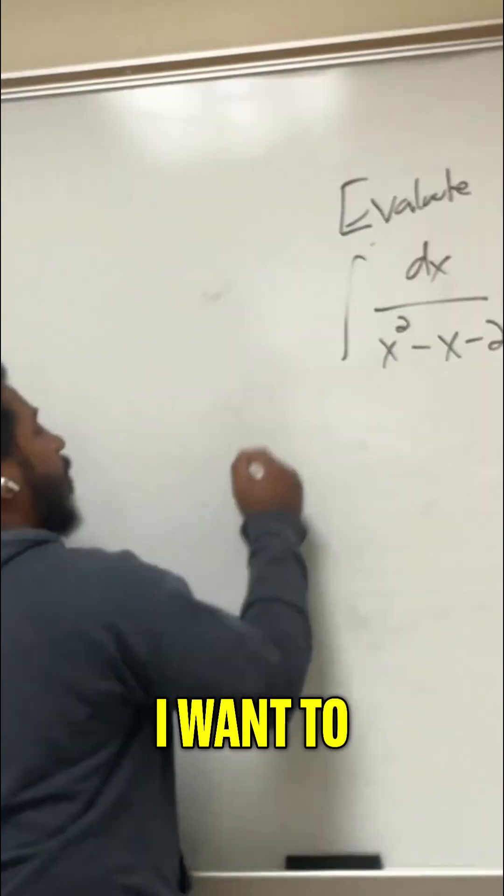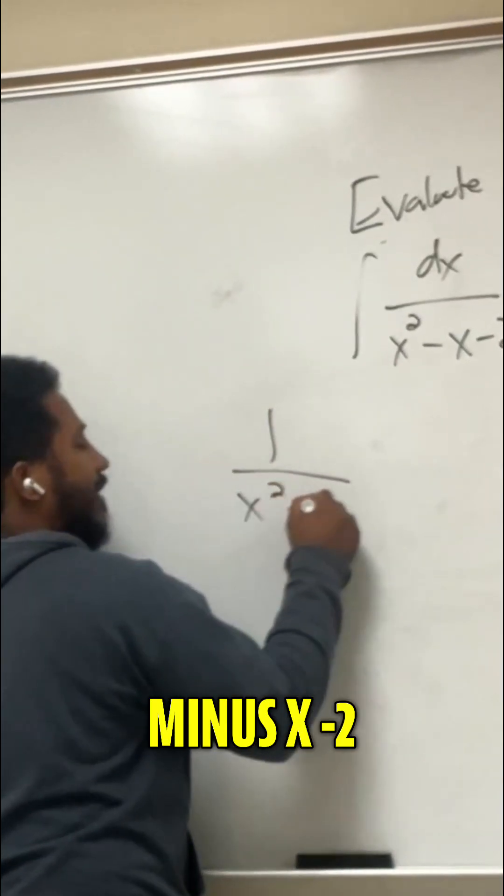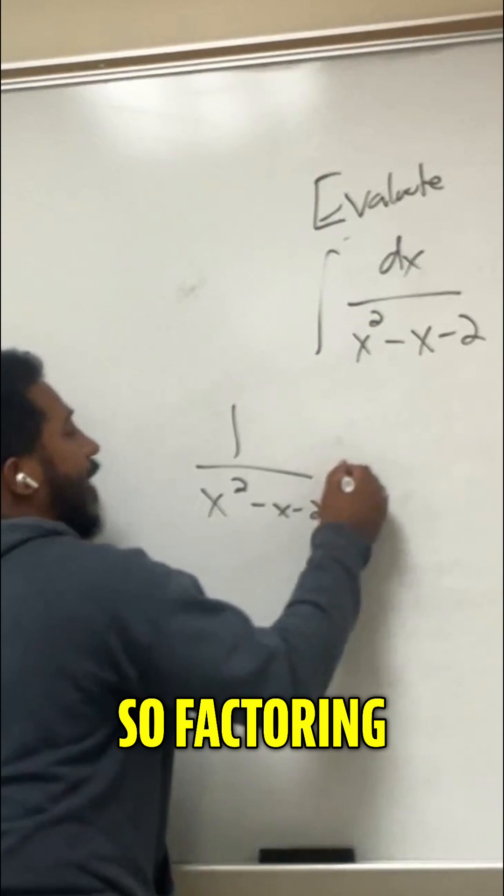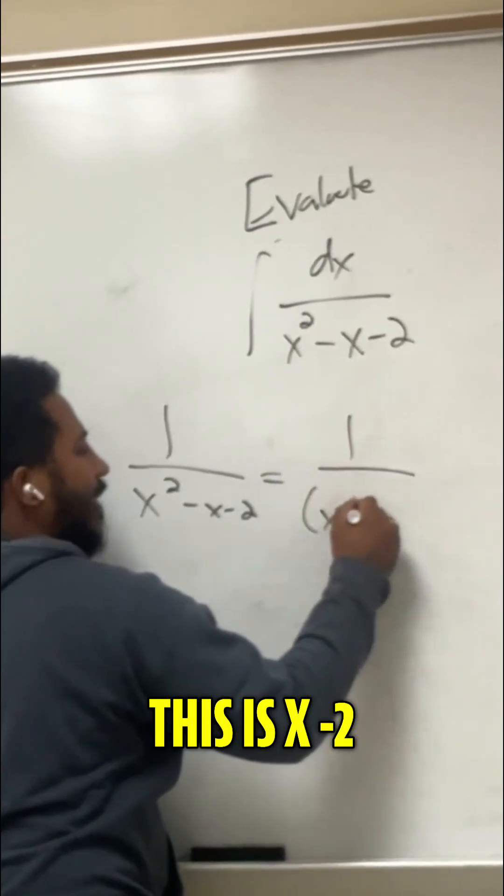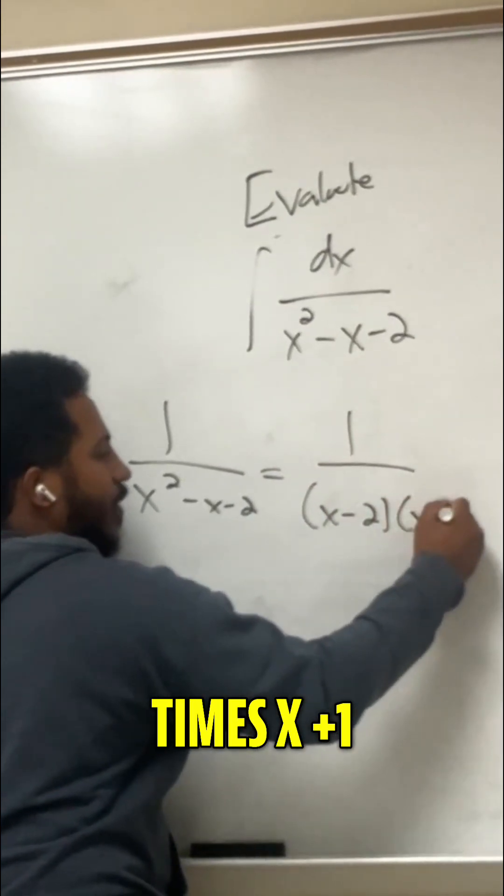So let's use our partial fractions. I want to rewrite 1 over x squared minus x minus 2 as different fractions. So factoring it, we'll get 1 over x minus 2 times x plus 1.